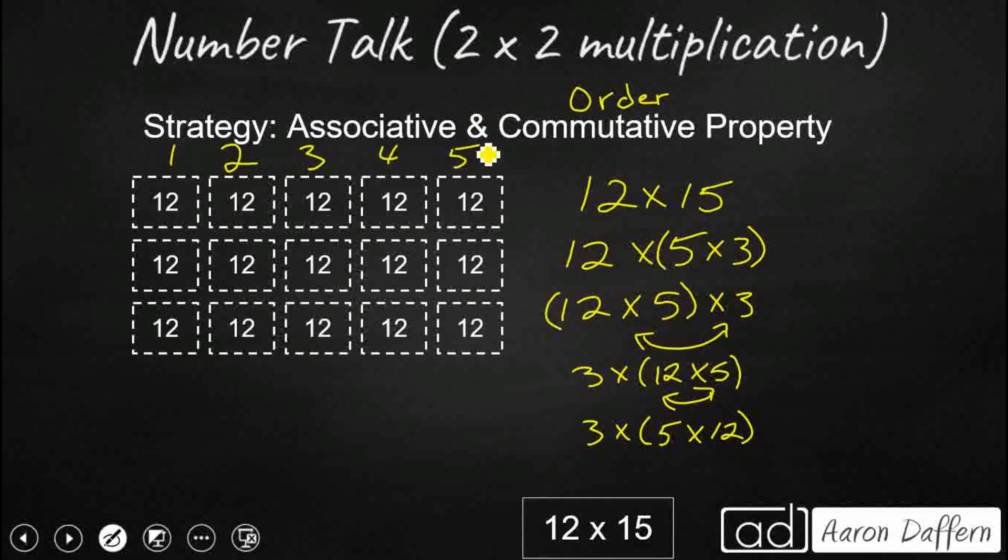I've got 5 groups of 12. So that is going to, right here is my 5 groups of 12. So that's going to be 60 again. I just got there a different way. And then I've got my three groups of 5 groups of 12. So I'm going to skip count by 60. I've still got my 180.